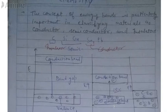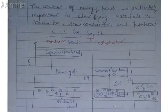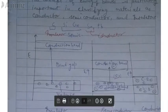Mainly, silicon and germanium are semiconductors. Carbon is used as an insulator, and tin, which is a metal, is used as a conductor.